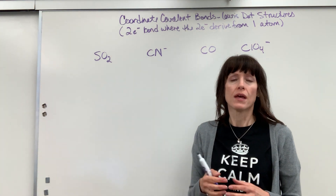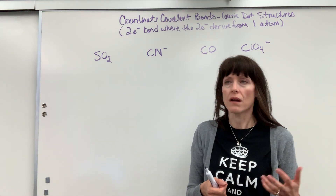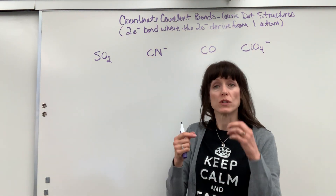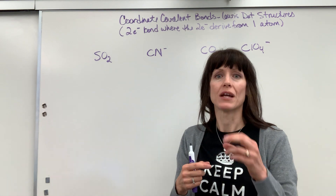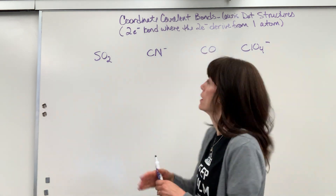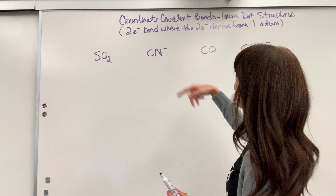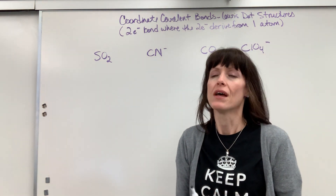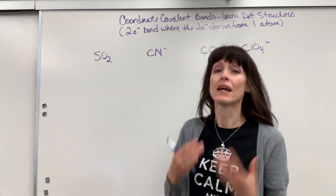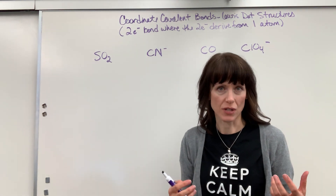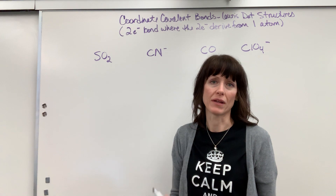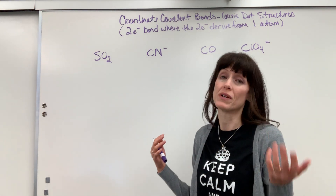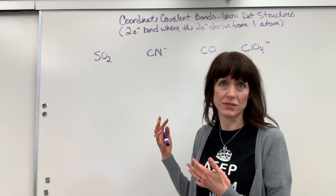Covalent bonds are a unique bond where one of the atoms shares a lone pair — two electrons — to create a bond. By definition, it's a two-electron bond where both electrons are derived from one atom. I like my students to know where the electrons are coming from, which is why we don't use the counting method. If you use the counting method, you really don't have to know this.